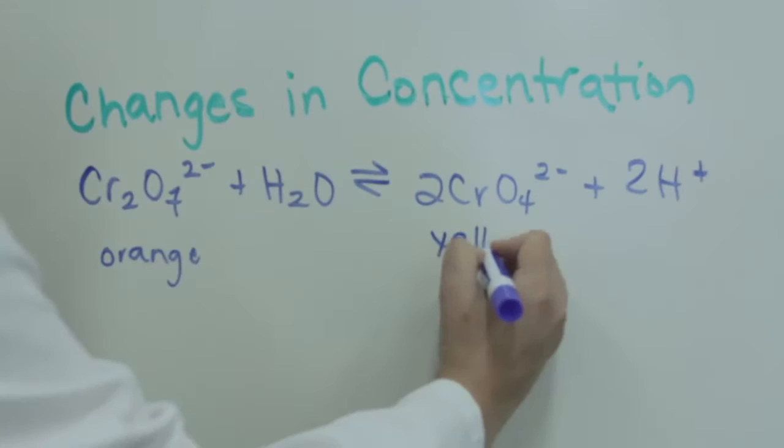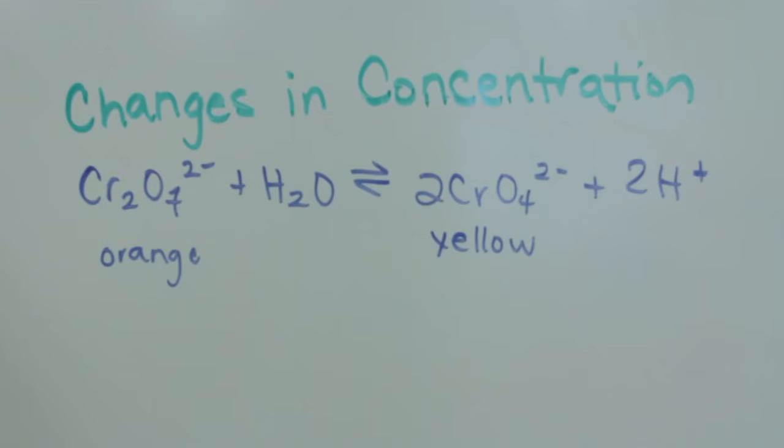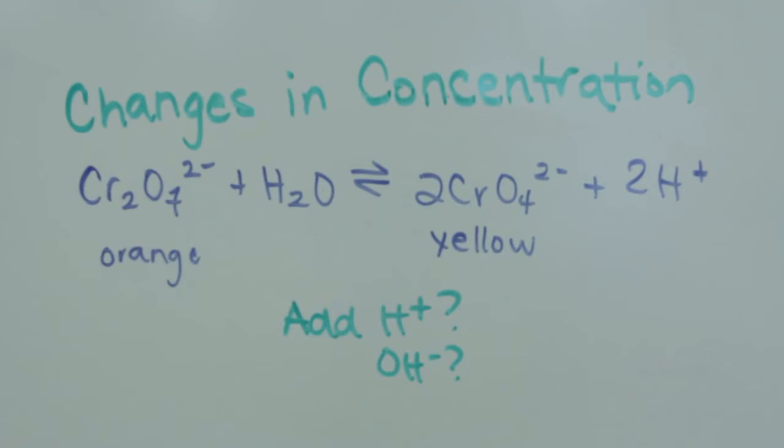The equilibrium that we'll study is one of dichromate in equilibrium with chromate ions. Dichromate is orange in solution while chromate is yellow. We'll observe the effect that adding HCl and adding OH- will have on the system.